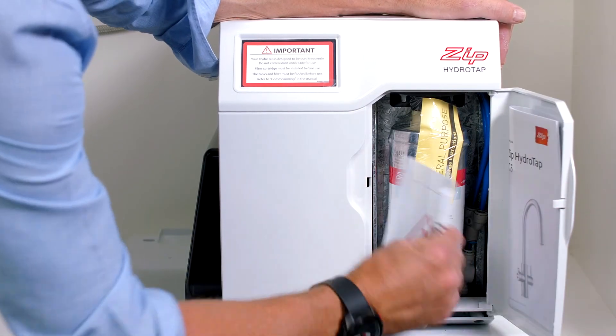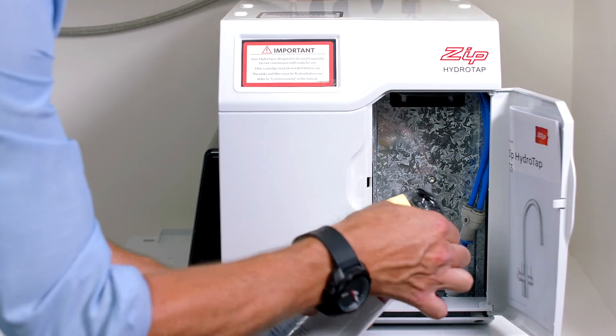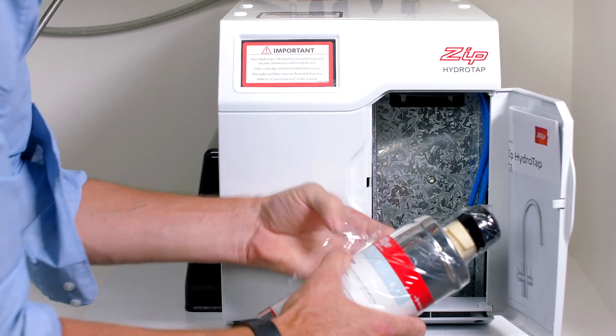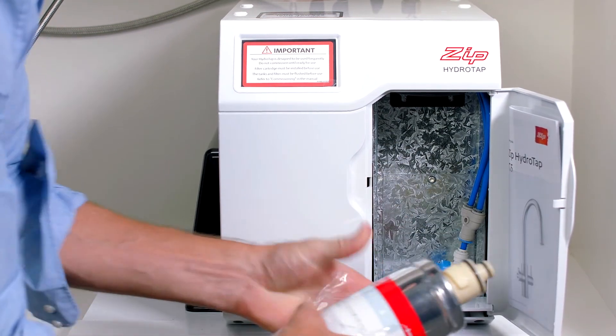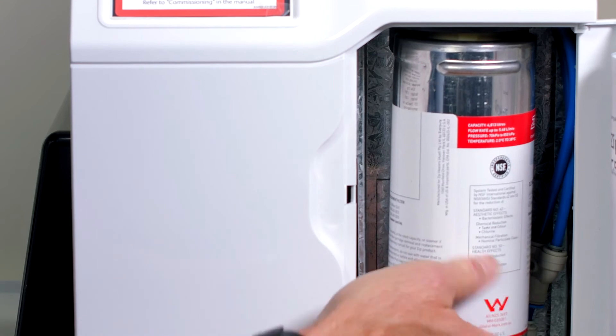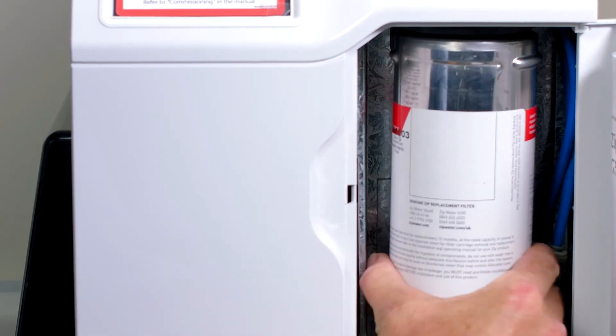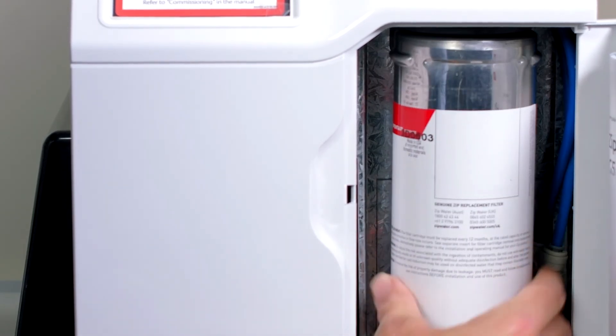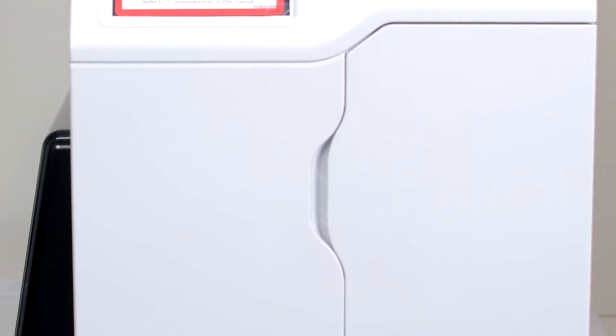The filter for the hydra tap comes loose in the filter compartment. Open the filter door, remove the plastic wrapping from the filter and fit the filter into the filter head. Locate the filter, push up and turn clockwise. The filter will stop turning when it's in place.